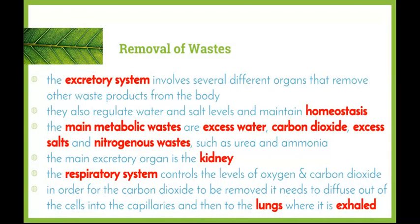So why do we need to get rid of waste? The excretory system involves several different organs that remove waste products from the body. They also help to regulate water and salt levels and, in effect, help to maintain homeostasis. The main metabolic wastes that we need to get rid of are excess water, carbon dioxide — which decreases pH and makes our blood acidic — excess salts, and nitrogenous wastes such as urea and ammonia.